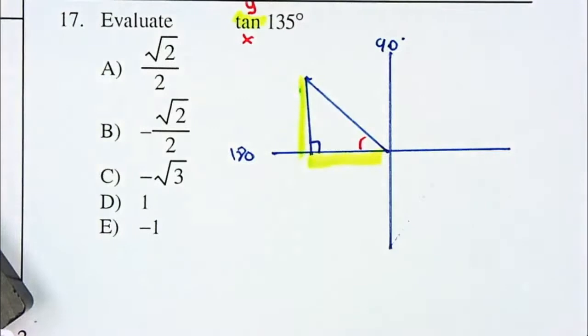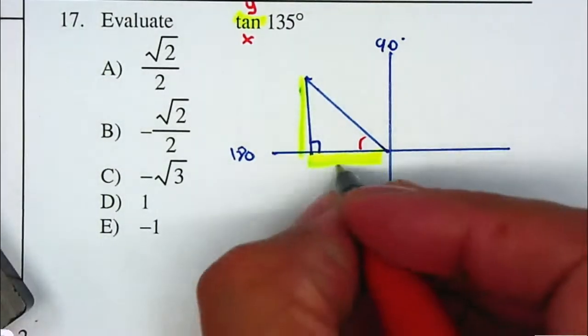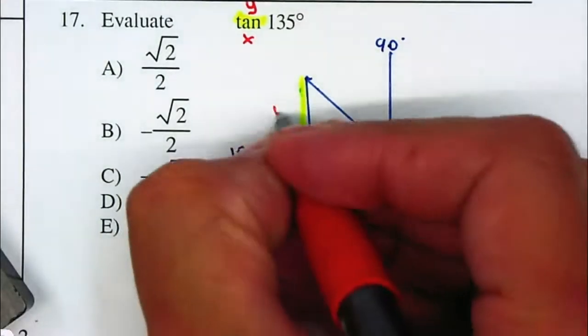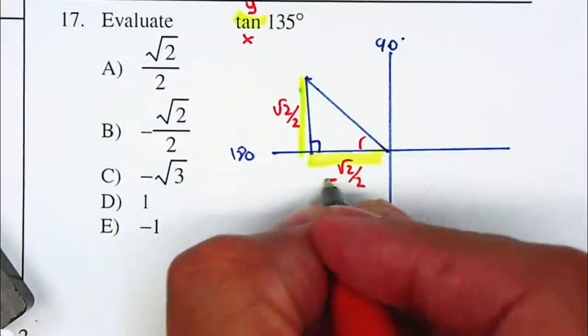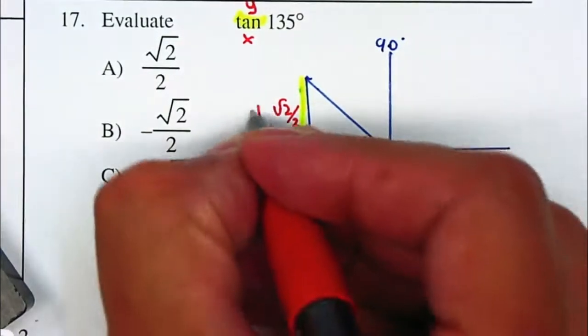If you remember that both are equal, they measure the same. This is square root of 2 over 2 and this is square root of 2 over 2. But you have to be careful, this is negative because it's going to the left and this one is positive.